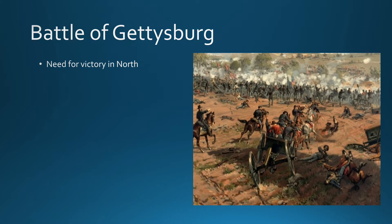The Confederacy is doing well, but their victories are taking place in the South — particularly in Virginia. Confederate leaders started to believe that the only way to achieve a truly decisive champion moment was to have a victory in the northern part of the country. Because of that, they decide to launch up into the north. We saw them try this at Antietam and it didn't work, but they decide to try again.